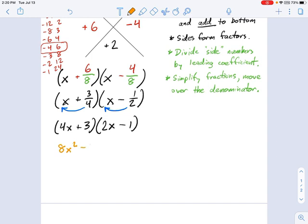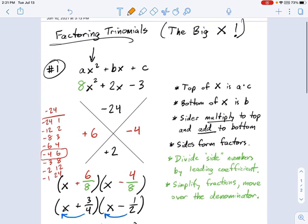4X minus 1 is negative 4X. 3 times 2X is positive 6X, and 3 times negative 1 is negative 3. We combine the like terms, 8X squared plus 2X minus 3. I sure hope that's right. Yep, there we go.